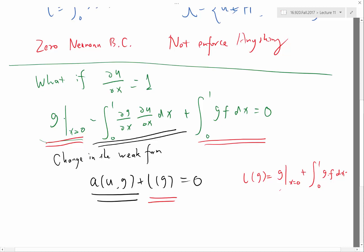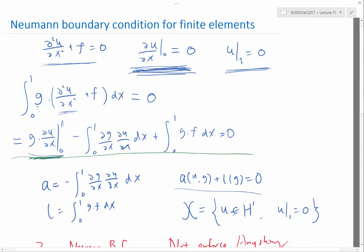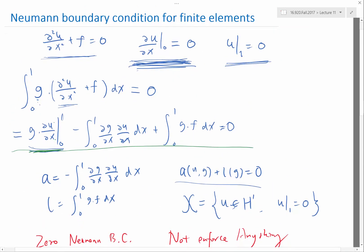Yes? What happened to the g times u at x equal to 1? Oh, at x equal to 1 we are, because we are satisfying a Dirichlet boundary condition we are restricting our space of solution to all the solutions that satisfy the Dirichlet boundary condition.